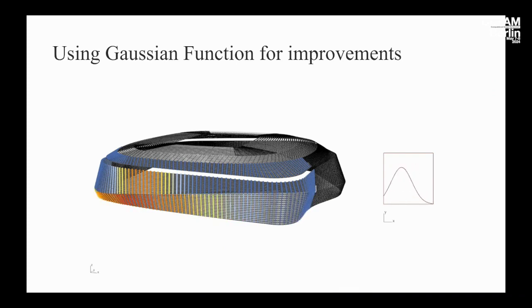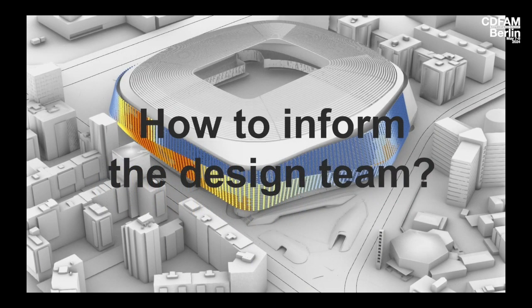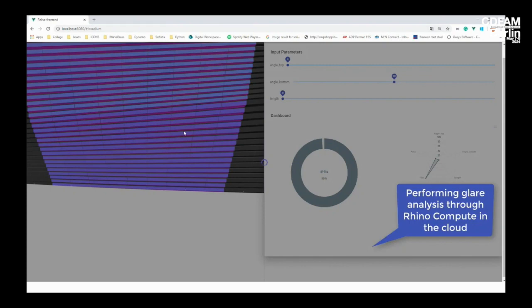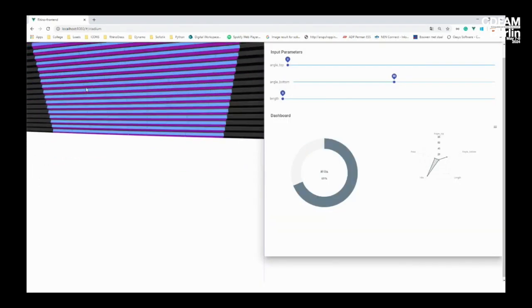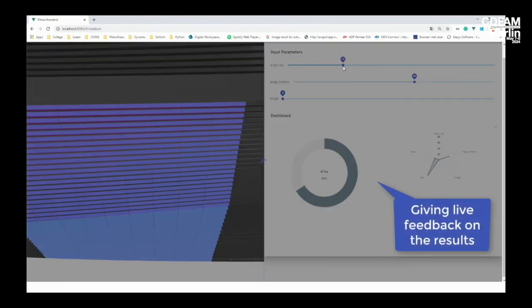From all of these results, we mapped some Gaussian functions to still have a nice and fluent iconic shape, so we could actually present something producible to the client and architect. But the very important question was: how could we actually inform the design team? You can do all these analyses, but you still have to convince the client and architect to go with your design decisions. Thanks to McNeel, we were testing Rhino Compute back then to actually send a model to the client, let them play with sliders, change the shape, and see how it would affect the reflections. This was really crucial in the development of a tool called ArupInform.